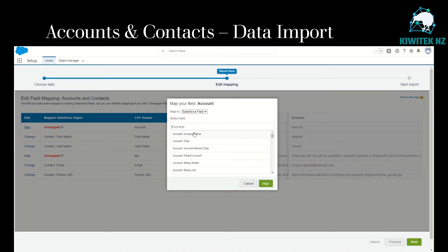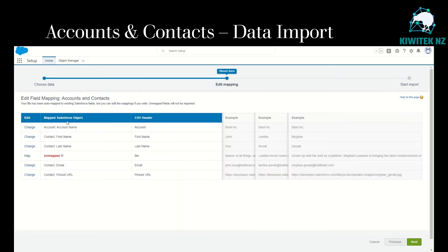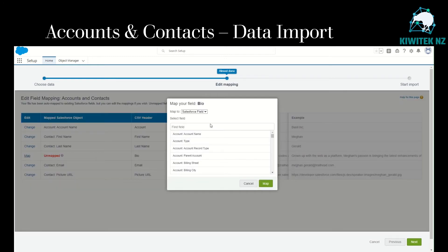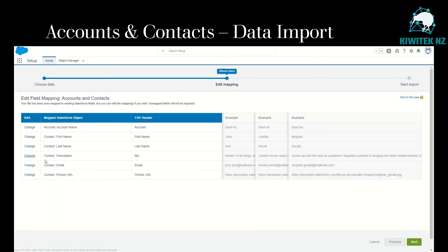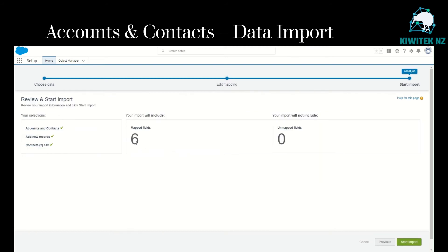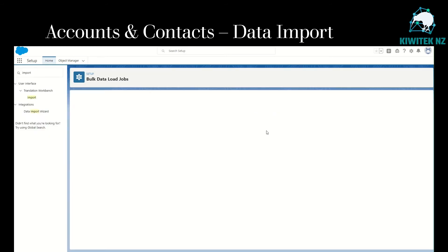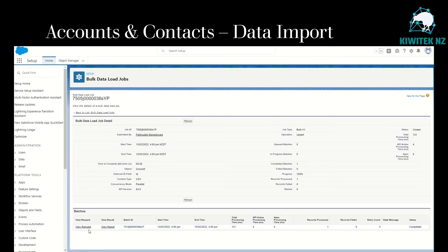We can see the data has been loaded, but there are a couple of fields that are unmapped. The account CSV header should be mapped to account name — we map that. Contact first name and last name have been mapped correctly. Bio has no such field in account, but we decided to map it to description, so we load it into the contact description field. Email is correctly mapped, and Picture URL is also correctly mapped. All six fields are mapped — click next, start the import, click OK.